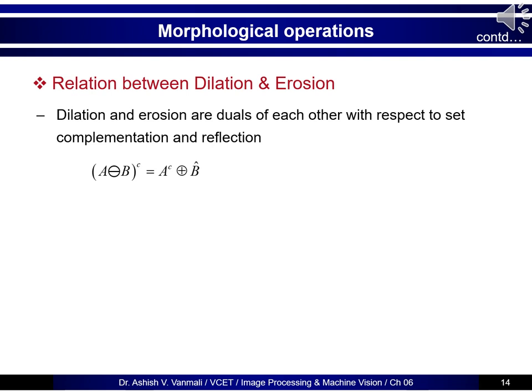Dilation and erosion form the foundation of morphological image processing. Observed closely, they are complements of each other — in fact, in set theory terms, they are duals with respect to set complement and reflection. There is a straightforward relationship: if you take the erosion of A by B and then take the complement, you get the same result as the complement of A dilated with B-cap. That is: (A ⊖ B)^c = A^c ⊕ B-cap.